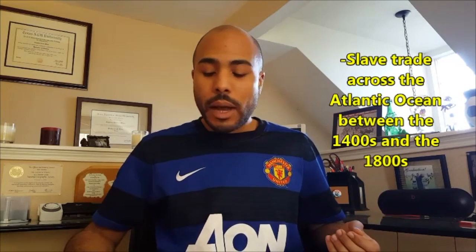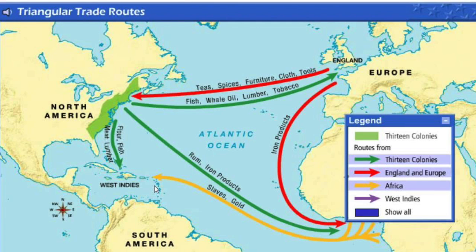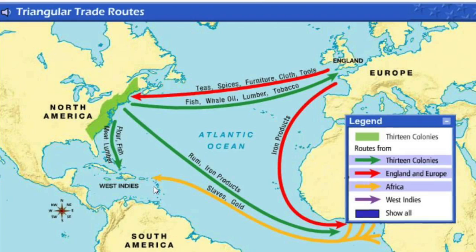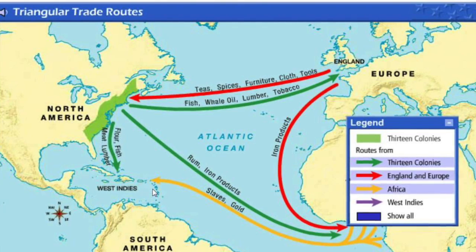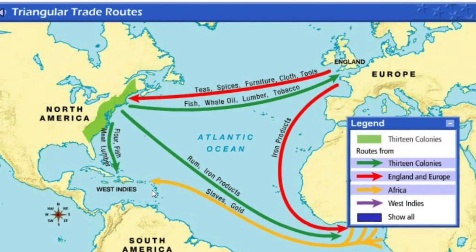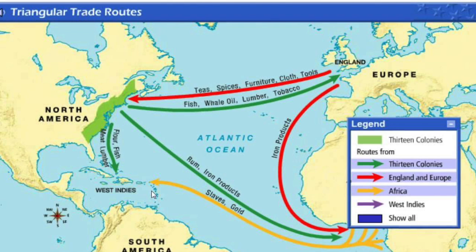Triangular trade was the trade pattern that happened between Europe, Africa, and the Americas. Some people refer to it as the slave trade because one of the main things traded was people. The impact on West Africa was that communities lost huge amounts of people — tremendous population loss. Looking at this map: from Africa to the Americas, slaves were traded; from America to Europe, raw materials like tobacco and sugar were sold; from Europe to Africa, manufactured goods like guns, clothing, and other technology were sold. It was called the triangular trade because the trade pattern resembled a triangle.